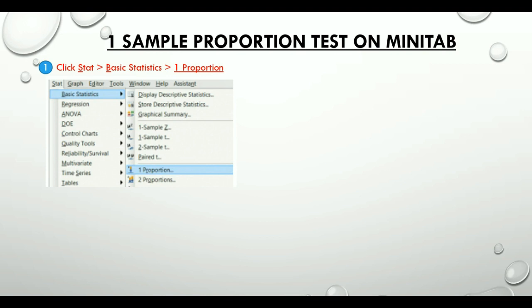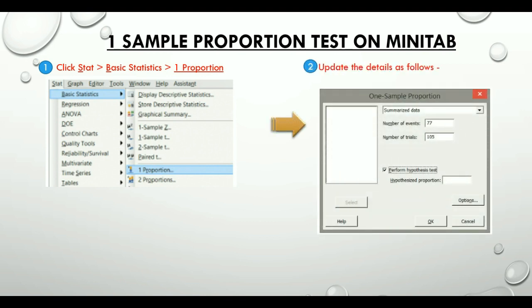We need to choose summarize data from the drop down and put the number of events and trials. Check the box which says perform hypothesis test and enter the hypothesized proportion.